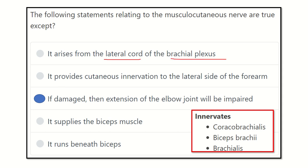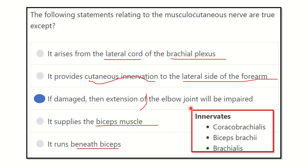To summarize: the statement that it arises from the lateral cord of the brachial plexus is true; it provides cutaneous innervation to the lateral aspect of the forearm is also true; it supplies the biceps muscle is true; and it runs beneath the biceps is also true. Therefore, the only false statement is that extension of the elbow joint will be impaired, because that movement is performed by the triceps muscle, which is innervated by the radial nerve.